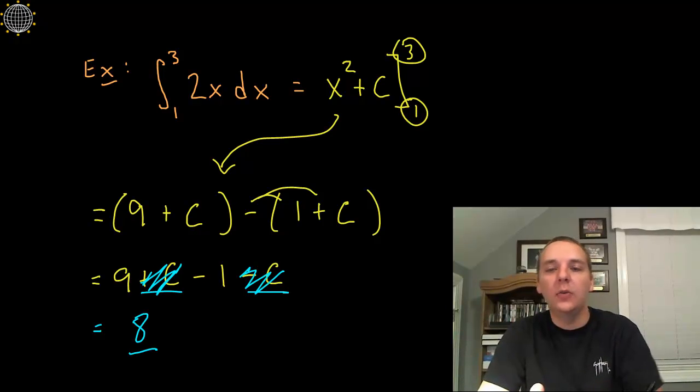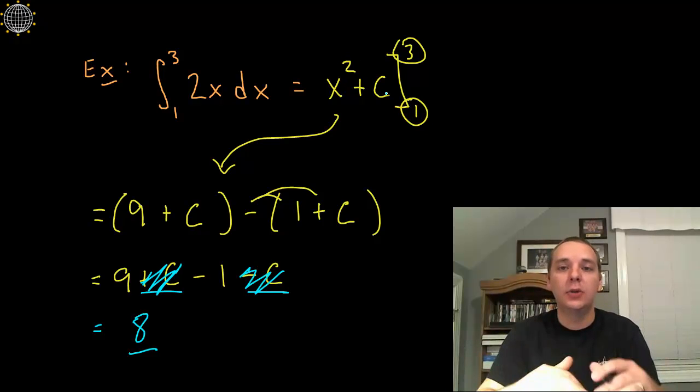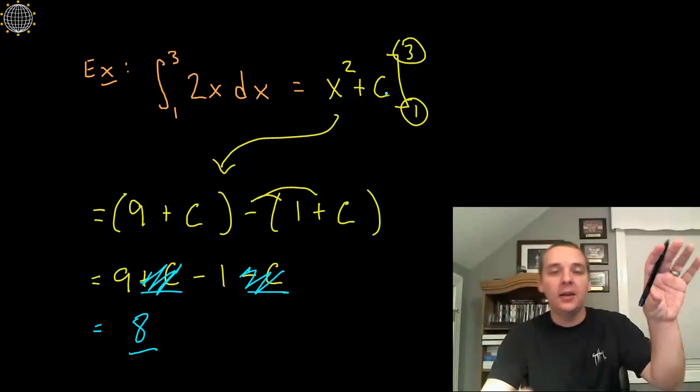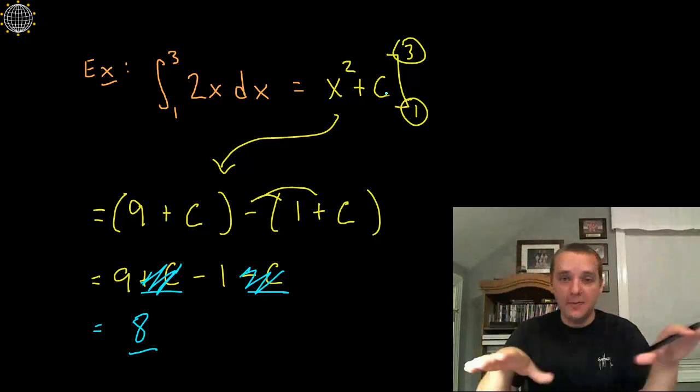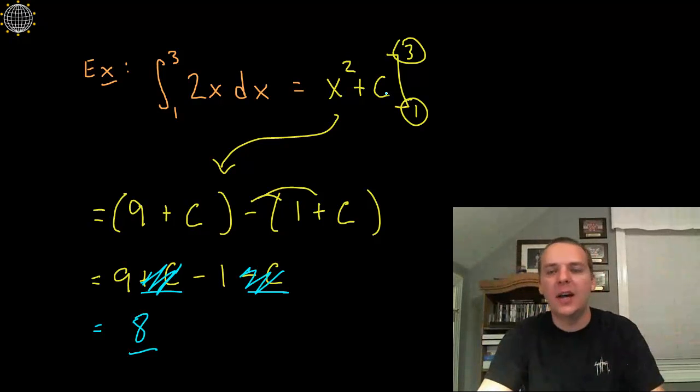So if we know that we're going to plug in the upper limit and plug in the lower limit and subtract, then you're going to get a C minus a C every time, 100% of the time. It's just kind of silly, why even write it?